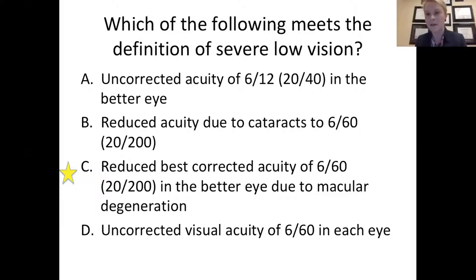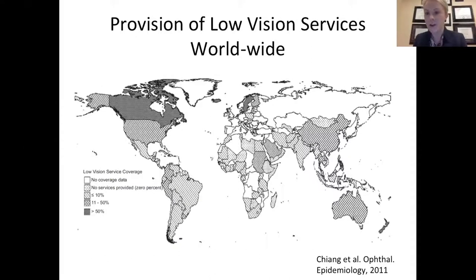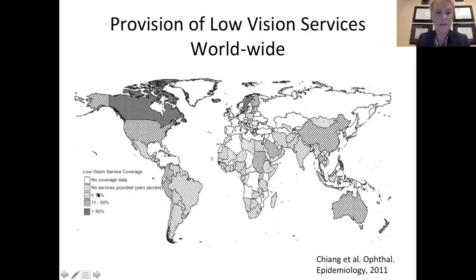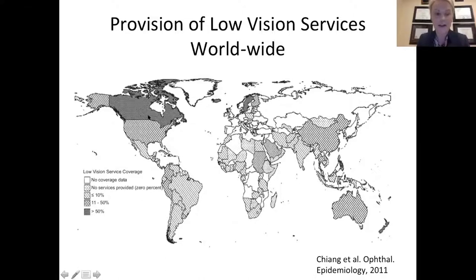Looking at the provision of low vision services worldwide, areas in white have no coverage, light dots indicate very limited services, and hashed areas indicate less than 10% of the population has access. In the cross-hatched areas, 11–50% have service, which is the case in the US. Darker shaded areas — like Canada — have greater than 50% coverage. There's a range of providers delivering low vision services, including optometrists, ophthalmologists, rehabilitation teachers, and educators, yet access remains less than ideal worldwide.